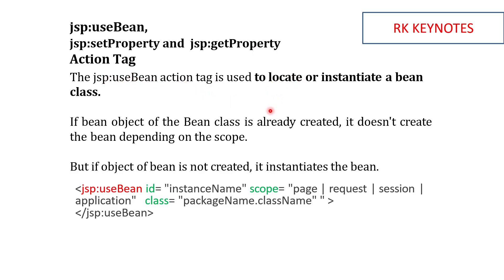The useBean action tag is used to locate a Java Bean class, or we can use it to instantiate it — meaning it can create an object which we then use. The syntax is: jsp:useBean id, where you specify a name, then the scope (page, session, or whatever you want), then class, followed by the package name and the class name you want to locate.